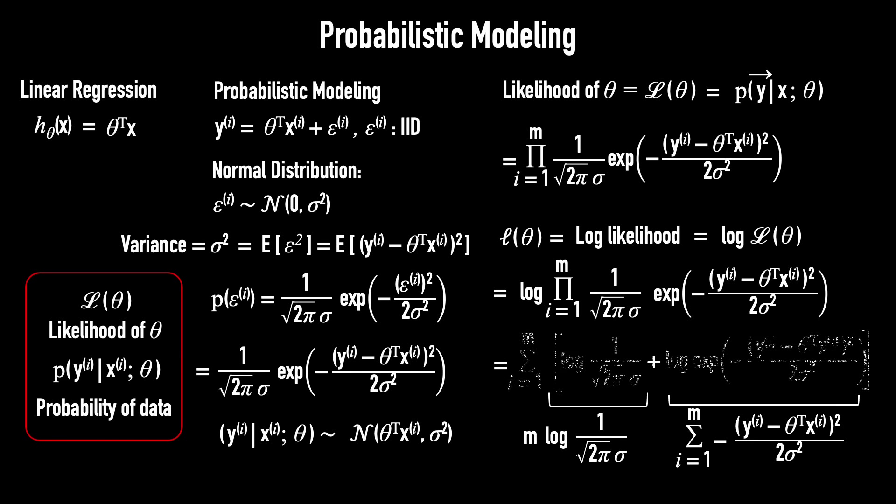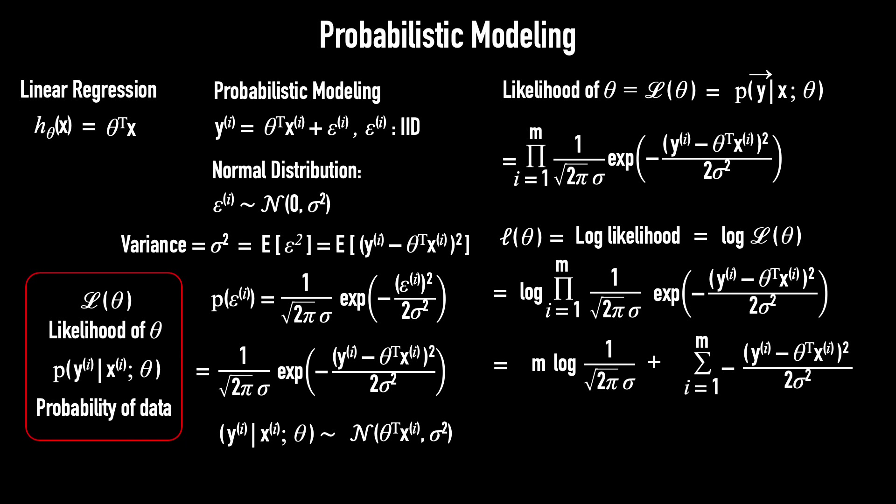So now, the log likelihood is equal to this expression. One of the most well-tested methods in statistics for estimating parameters is to use Maximum Likelihood Estimation, or MLE, which means you choose θ to maximize the likelihood, or in other words, choose the value of θ that maximizes the probability of the data. Because the likelihood and the log likelihood are monotonic, we can maximize the log likelihood instead of the likelihood itself.